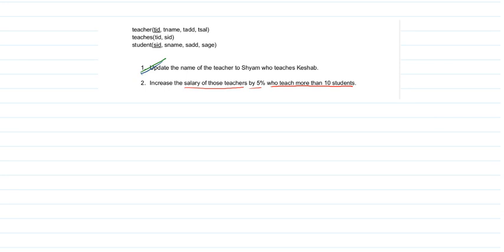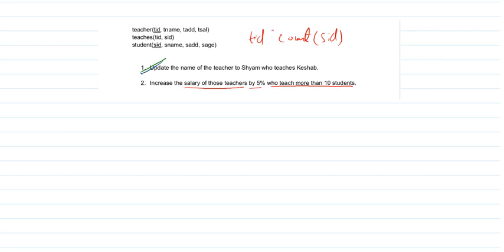Let's get started. The first part is to perform an aggregate function so that I can count which tid teaches how many students. For each tid, I have to count the number of students — that means counting the s_id. So I'll perform an aggregate function called COUNT, counting s_id, and grouping the table by tid. I can write it either way — both are valid.